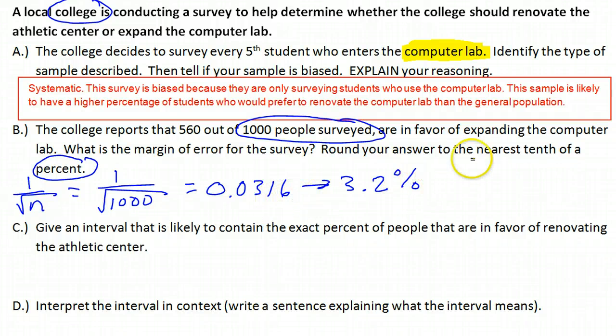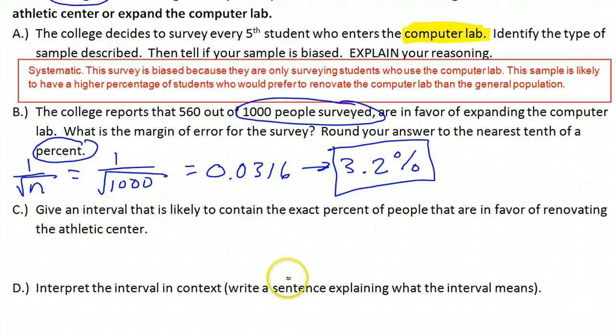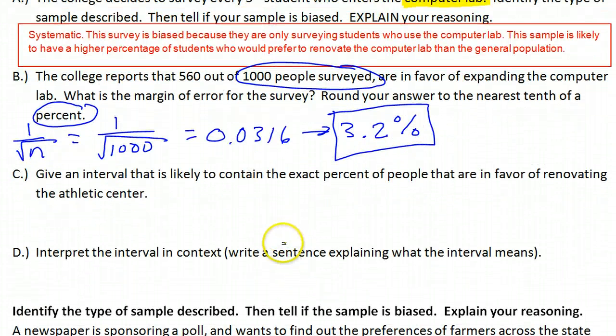It said the nearest tenth, that's why I went to one decimal place. Now, give an interval that is likely to contain the exact percent of people that are in favor of renovating the athletic center. That interval, well, first I need to know the percentage of people in the survey that were all about expanding the computer.